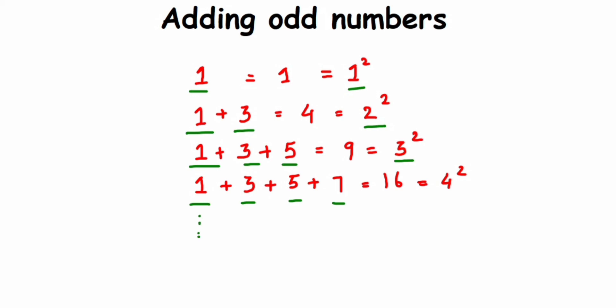So likewise, if I keep on going, let me suppose add 1 plus 3 plus 5 plus 7 plus 9 plus 11 plus 13. So instead of adding, what I can do is just count how many odd numbers I'm adding: 1, 2, 3, 4, 5, 6, 7.